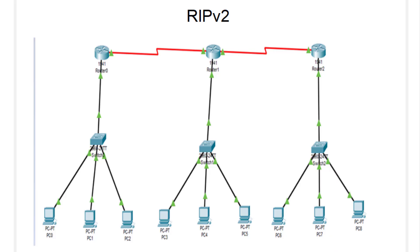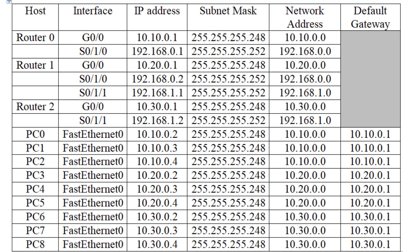RIP version 2 also has some security features. In this particular case, the different thing is that we will use a classless addressing concept — CIDR addressing. So these would be the IP addresses we will be using.